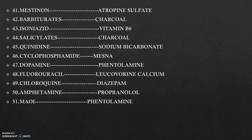For barbiturates, we actually don't have a proper antidote. We treat the symptoms, provide more oxygen, and follow a special treatment protocol. Charcoal can be used in case of isoniazid — vitamin B6. For salicylates, charcoal is used. For quinidine, sodium bicarbonate is used — sodium bicarbonate is used in many toxicities. For cyclophosphamide, mesna is mainly used. For dopamine, it is phentolamine, because phentolamine reverses the activity of dopamine. For fluorouracil, we use leucovorin and calcium.